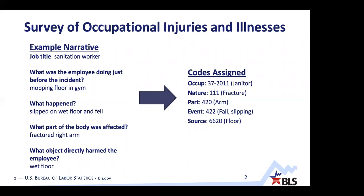We found this is a very difficult task to teach people. There are 840 different occupation codes, 1,400 source codes, and complex rules for deciding when one code takes precedence over another. The result is that if we take two expert human coders and have them code the exact same narratives, they assign the same codes only about 70% of the time. These considerations motivated us to look into ways to get computers to perform this task.